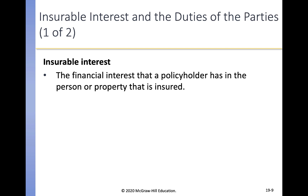To obtain insurance, one must have an insurable interest — the financial interest a policyholder has in the person or property insured. All people have an insurable interest in their own lives and the lives of their spouses and dependents. Business partners have insurable interest in each other because they could suffer financial loss if a partner dies. A corporation usually has a financial interest in its key employees for the same reason. With property insurance, anyone who would suffer a financial loss from damage to property has an insurable interest.